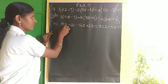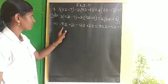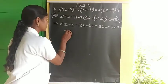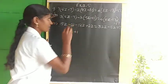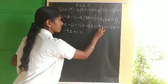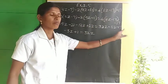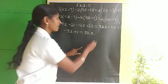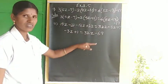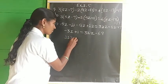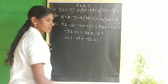Now simplifying: minus 3z plus 1 equals 32z minus 69. Rearranging, bring z terms together: minus 3z minus 32z equals minus 69 minus 1, giving minus 35z equals minus 70. So 35z equals 70.